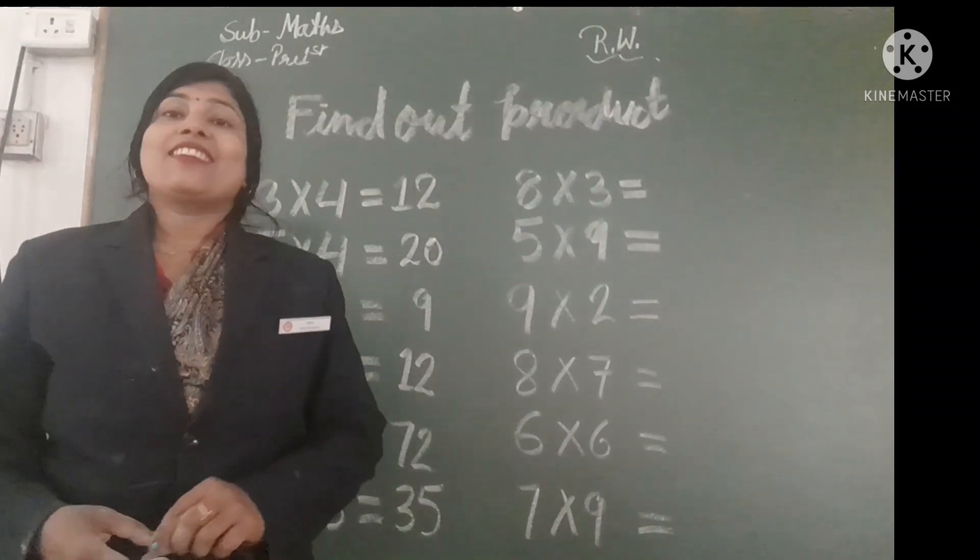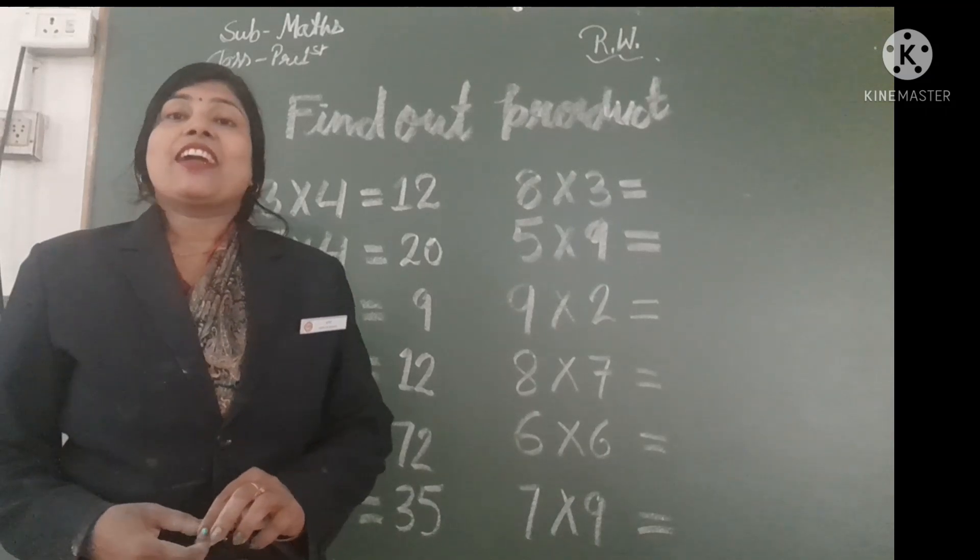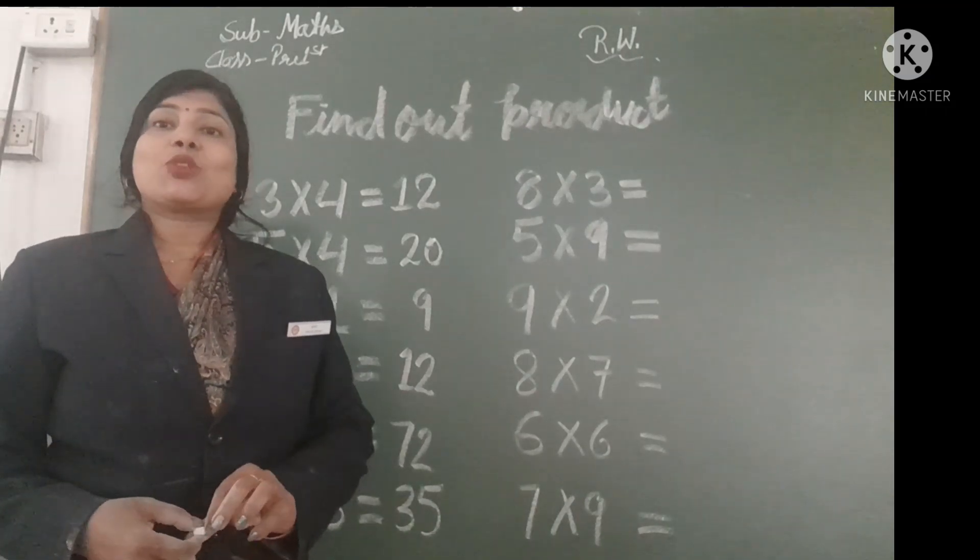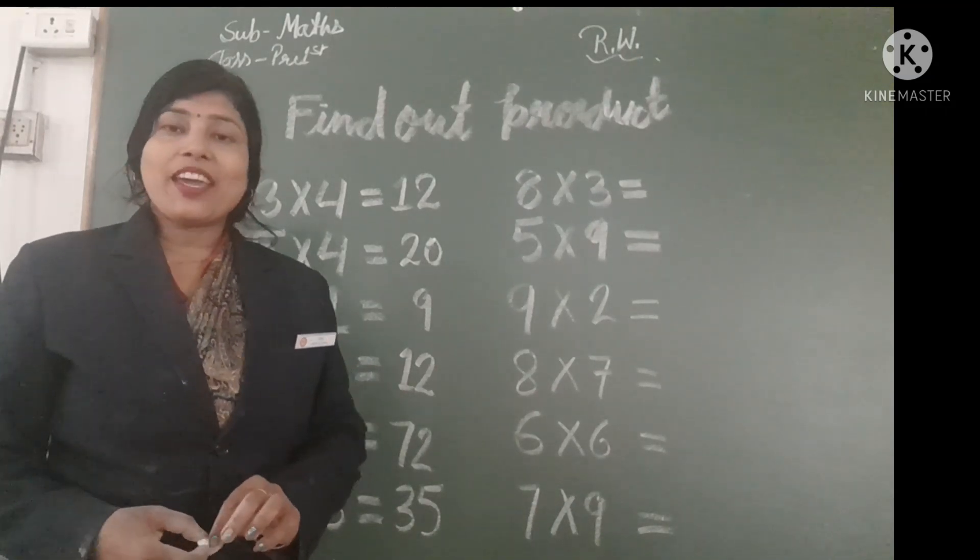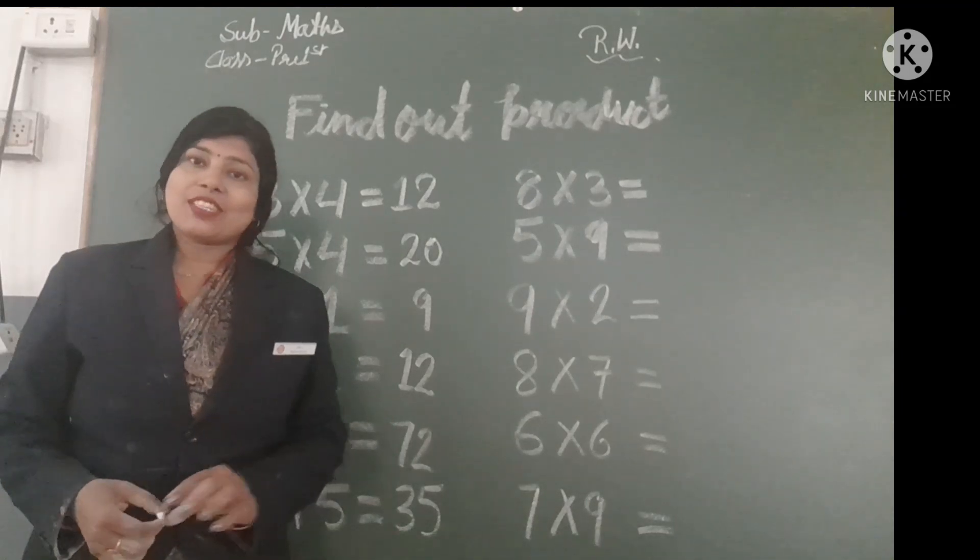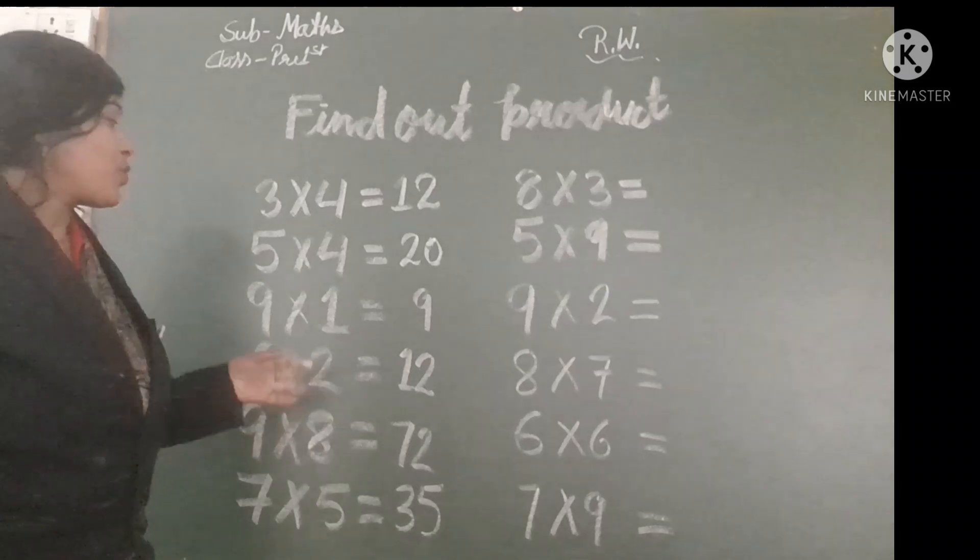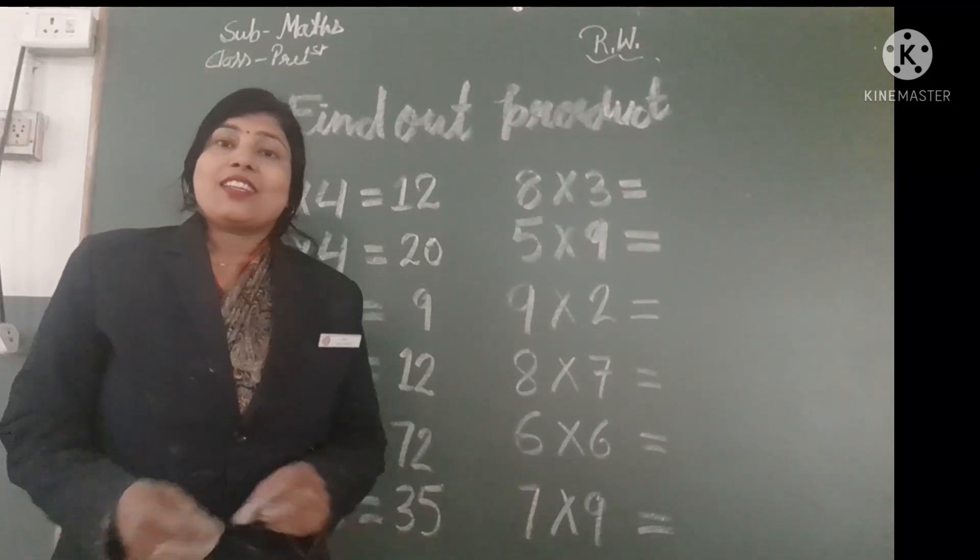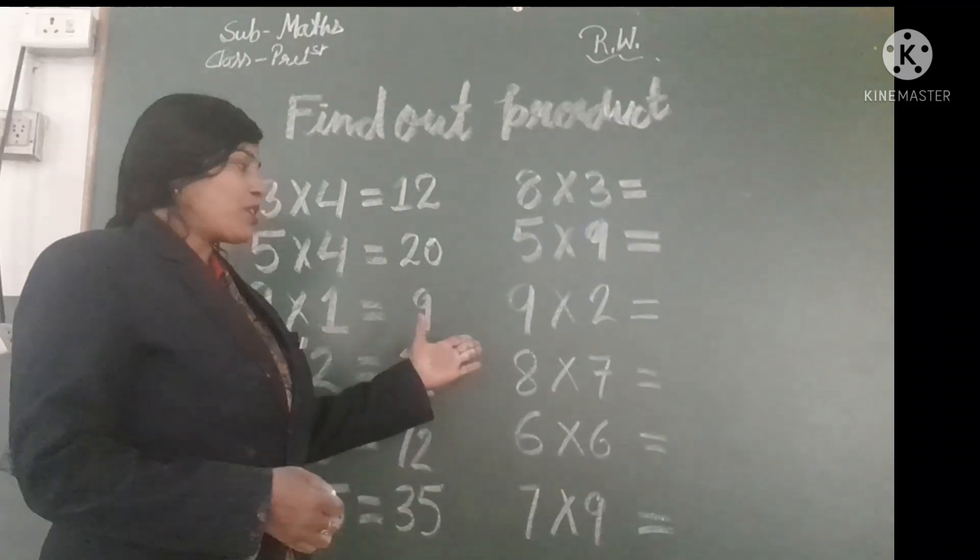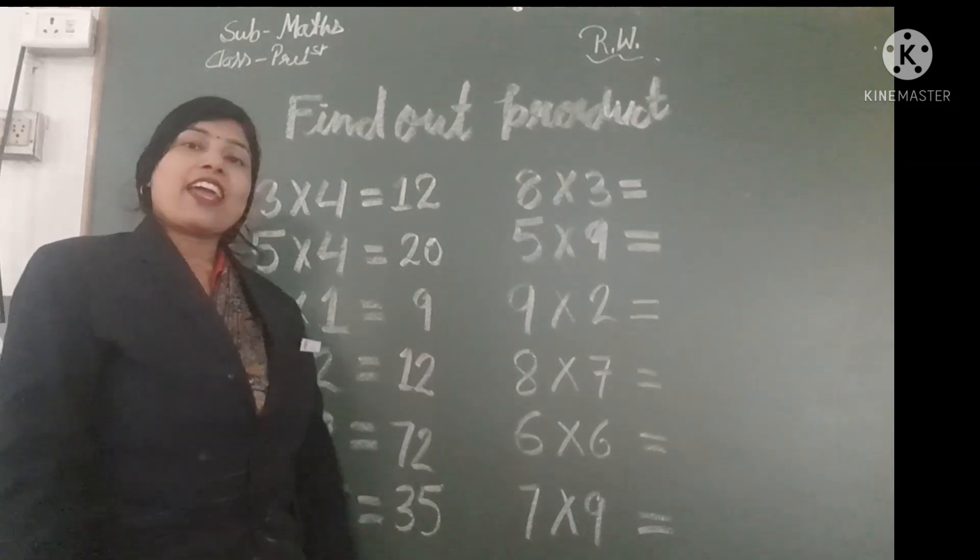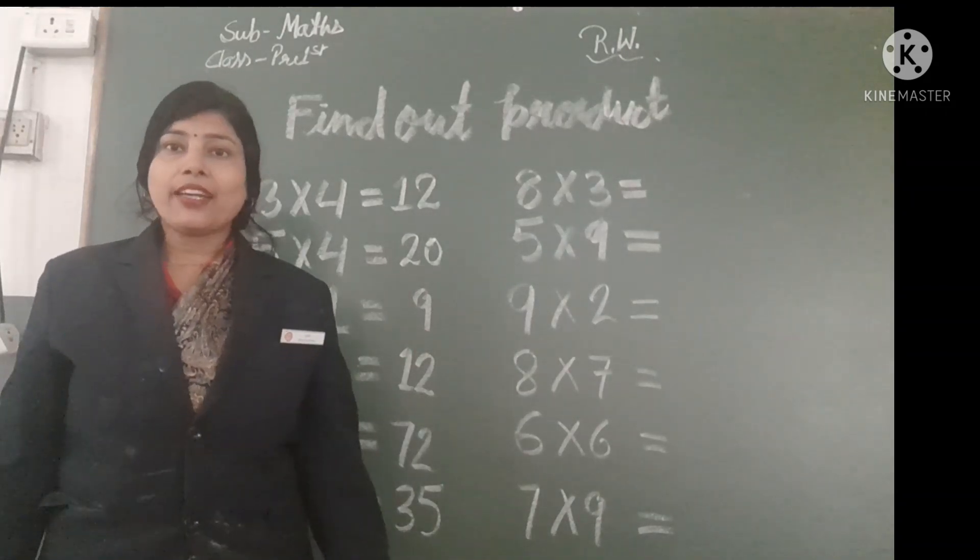It is so easy. All of you, learn table 2 to 10. So, it is so easy. It is table of 2 from 10. All of you, find out this product and write in your notebook and send.